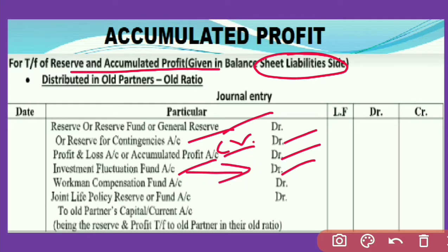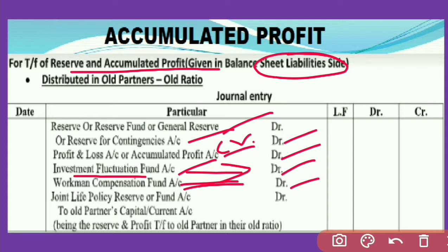Keep in mind: investment fluctuation fund is that reserve given on the liability side of the balance sheet. If there is no loss on investment at the time of admission of a new partner, all the amount of this investment fluctuation fund is distributed among old partners. Workman compensation reserve or fund account is debited. If there is no claim, all the amount is debited and distributed among all partners. If there is any claim, first the claim amount is deducted from workman compensation fund and the remaining amount is distributed among old partners.